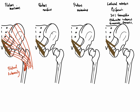Looking at gluteus medius, deep to gluteus maximus: this muscle originates from the external surface of the ilium, between the posterior gluteal line and the anterior gluteal line. The muscle fibers originate from the space between these two lines and pass to the greater trochanter of the femur, running in this direction.